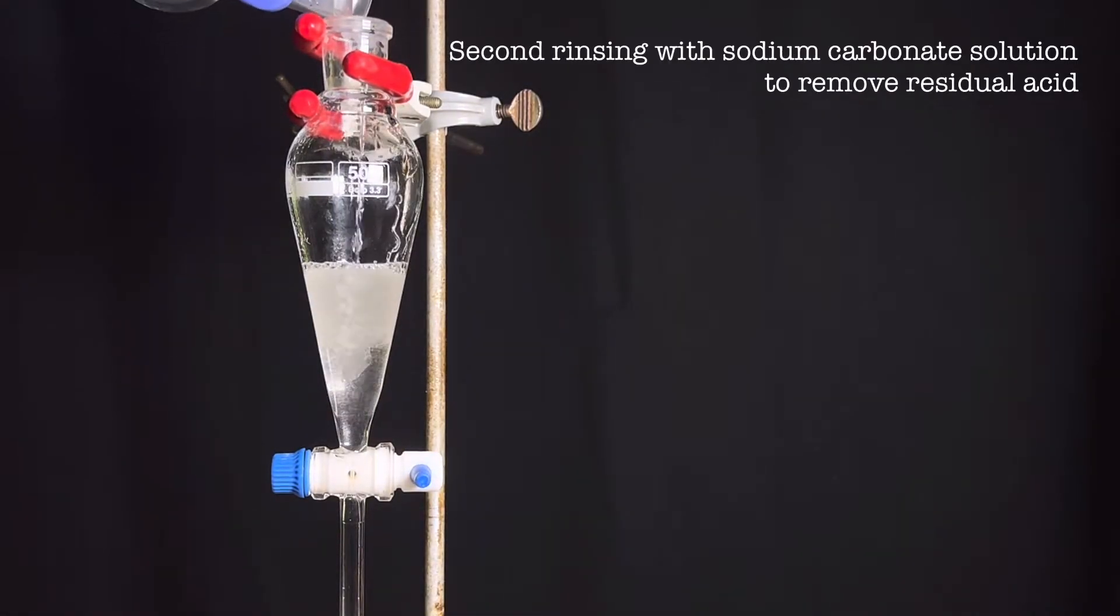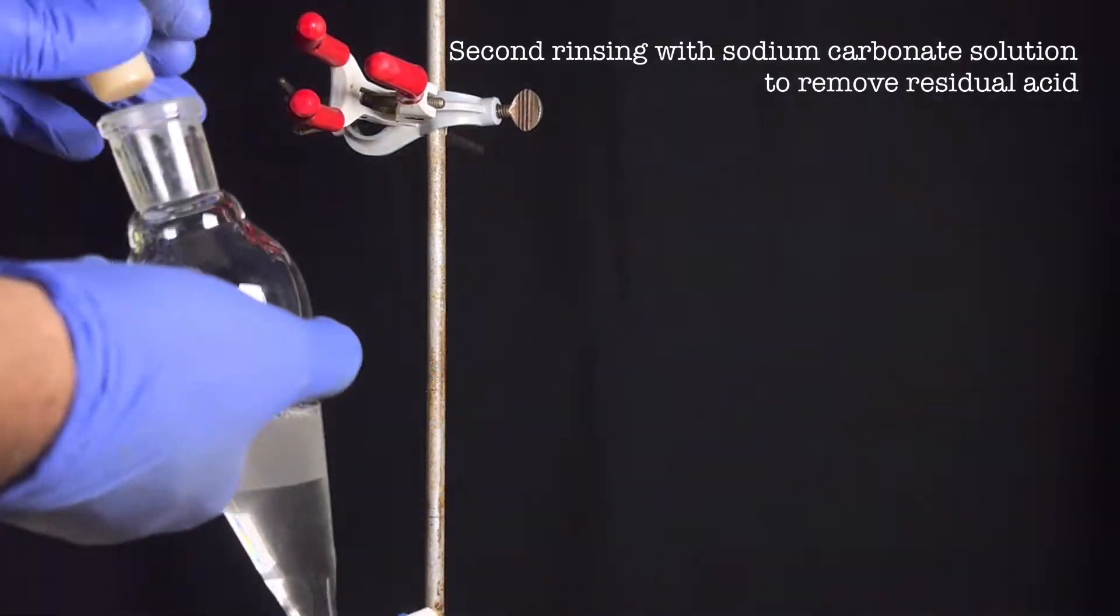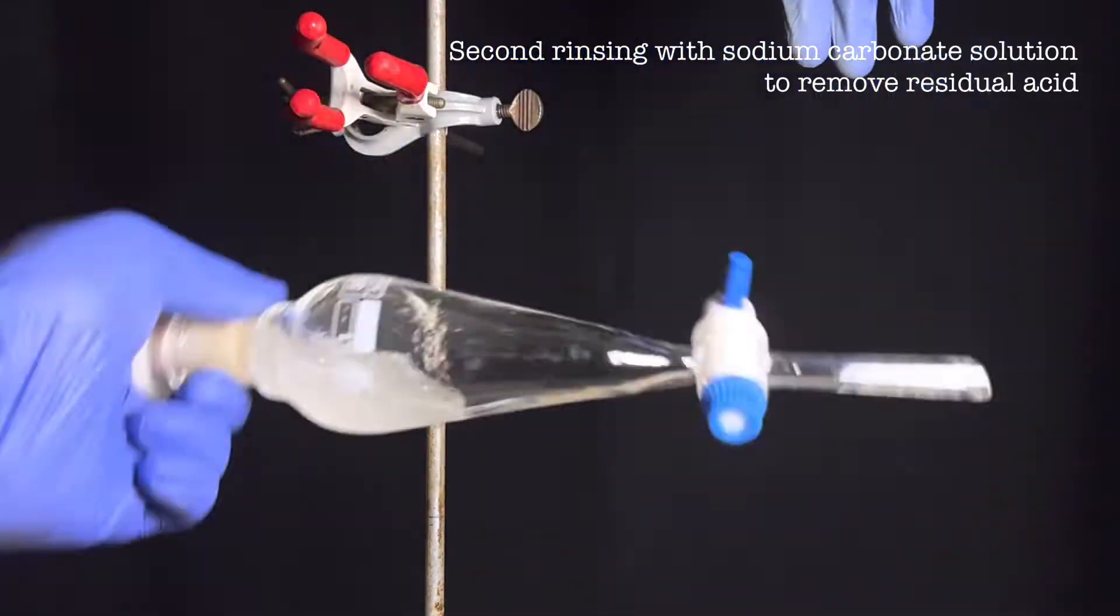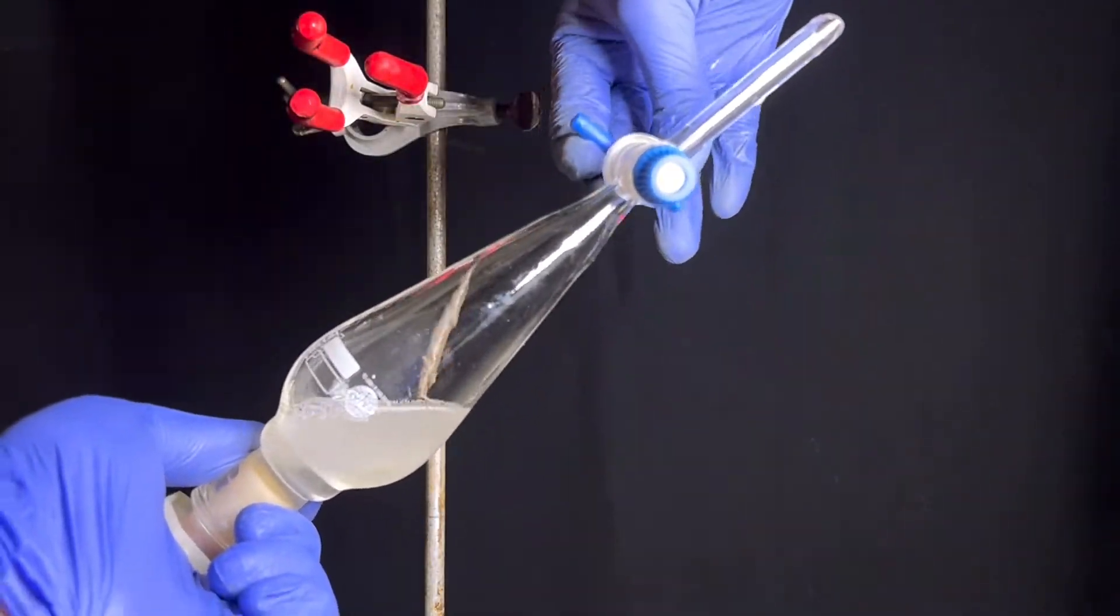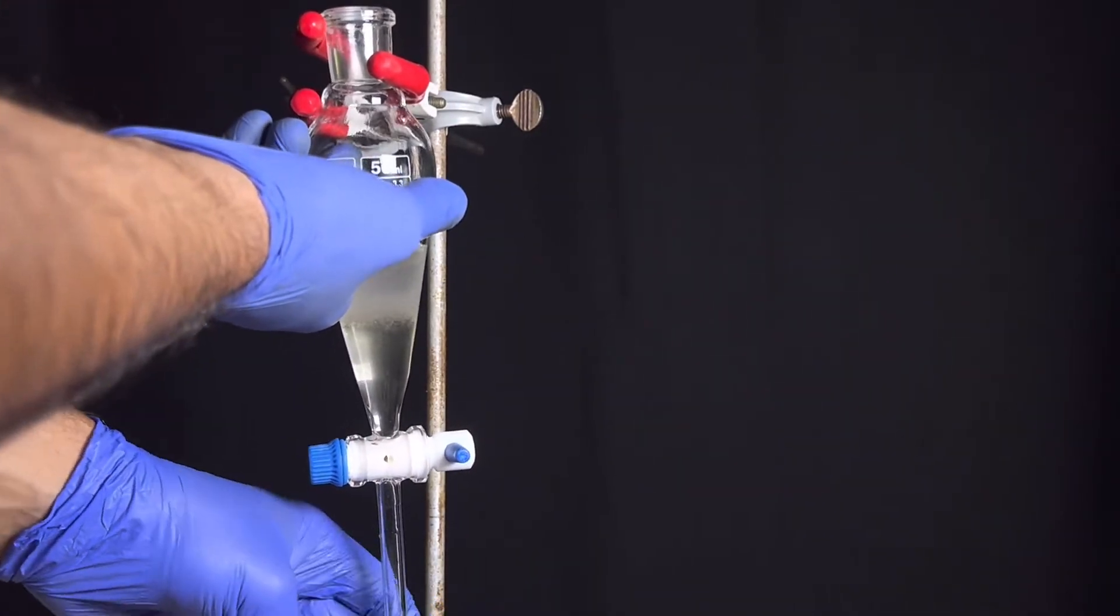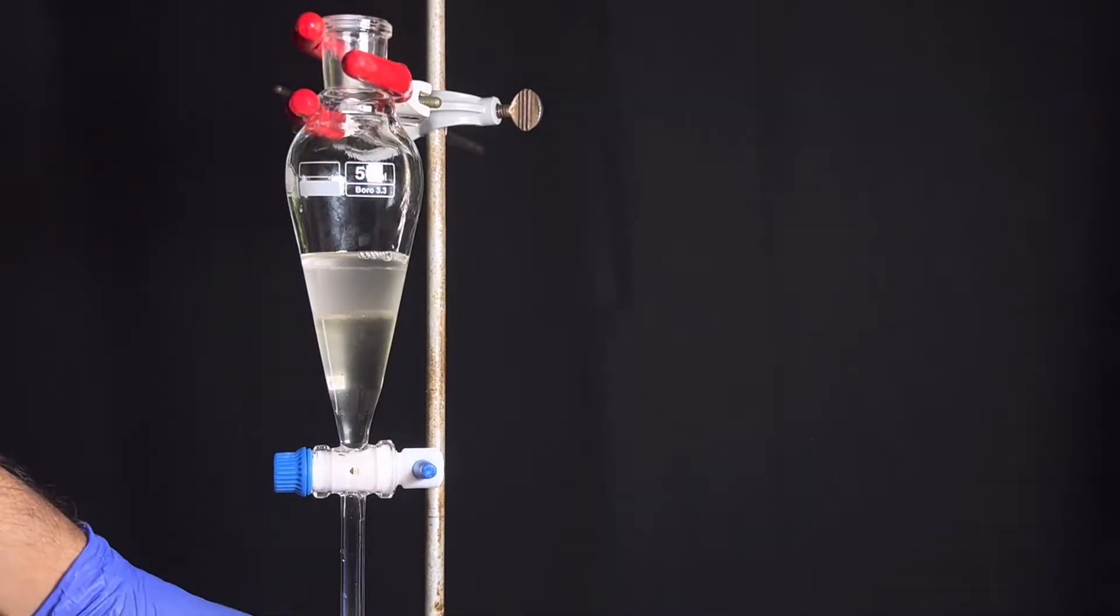Now rinse the product with sodium carbonate solution to remove any residual phosphoric acid if present. Again the separatory funnel was capped, shaken and vented. Again the lower layer was discarded.